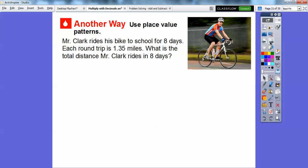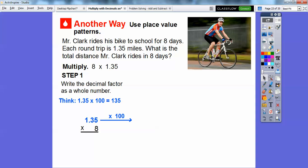So let's try another one, you guys. Let's use place value patterns. So Mr. Clark rides his bike to school for 8 days, and each round trip is 1.35 miles. So what is his total distance Mr. Clark rides in 8 days? So we're going to multiply 8 times 1.35. So here's another way, you guys. We're going to use place value patterns, and we're going to write the decimal factor as a whole number. So remember, 1.35 times 100 just moves that decimal over two places to the right. So we're going to change this 1.35 to 135. So we're going to multiply 135 times 8. So let's go ahead and multiply with the whole number. So we'll multiply this 135 times 8 like we normally would.